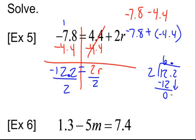Bring down that 2. 2 goes into 2 once. So we have r equals, and remember, negative divided by positive, negative 6.1. Try number 6 on your own.